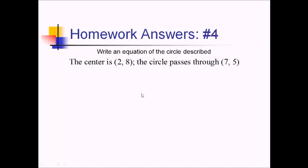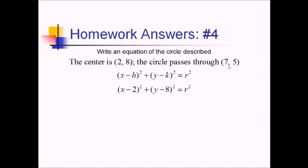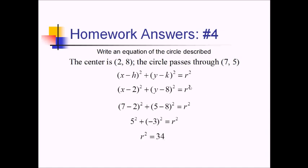For number four, we're trying to find the equation of a circle whose center is (2, 8) and that passes through (7, 5). Plugging in the center: (x − 2)² + (y − 8)² = r². To find r², we plug in 7 and 5: (7 − 2)² + (5 − 8)² = 5² + (−3)² = 25 + 9 = 34. So the equation is (x − 2)² + (y − 8)² = 34.